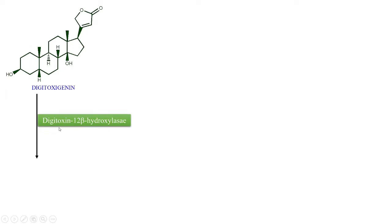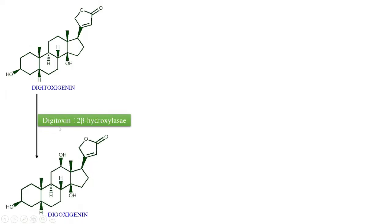Next, digitoxigenin, in the presence of the enzyme digitoxigenin 12-beta hydroxylase, is converted to digoxigenin. The key difference is at position 12: in digoxigenin there is a hydroxyl group, while in digitoxigenin there is a hydrogen at that position.